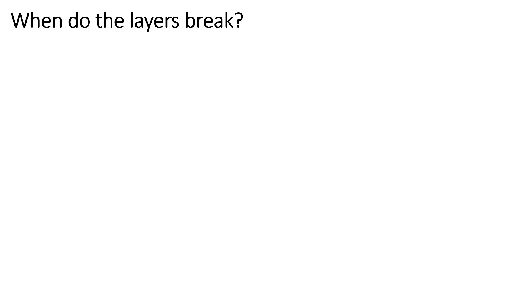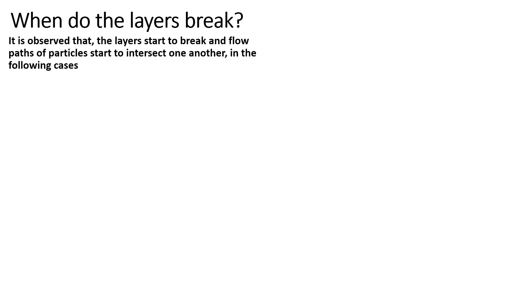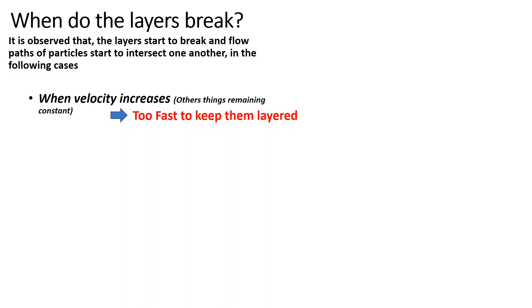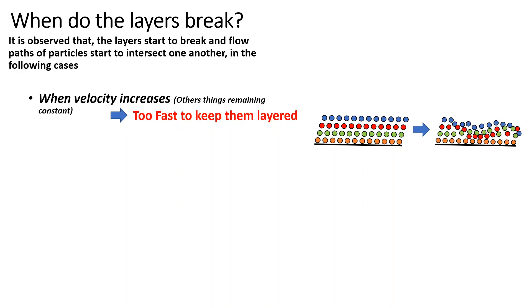But sometimes these layers do not behave in such an orderly manner — they break or bend. We observe this when the particles are just too fast to keep them ordered or layered. If velocity increases beyond a certain level, the layers will not behave in an orderly manner and will become quite chaotic or random.